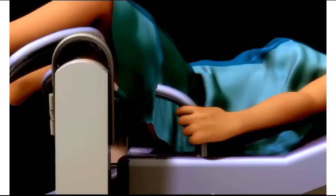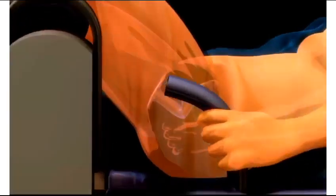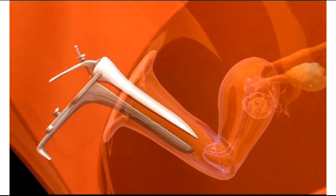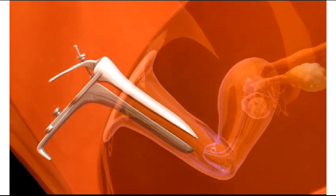The catheter, a thin, flexible tube, is gently inserted into the uterus. The sperm is then delivered directly to the uterine cavity. It's kind of like giving the sperm a shortcut to where they need to be.